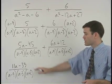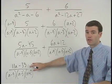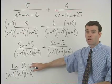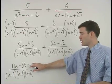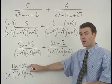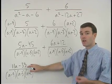As your last step, see if you can factor the numerator so that maybe one of our binomials will cancel out. In this case, notice that the numerator has a greatest common factor of 11.